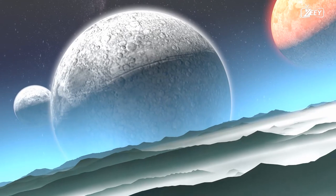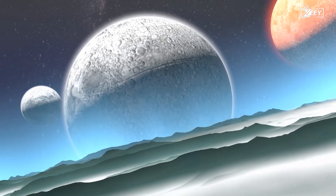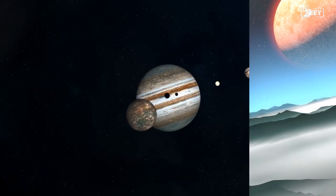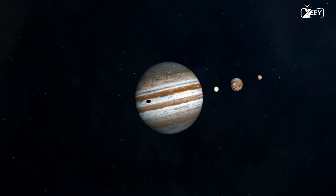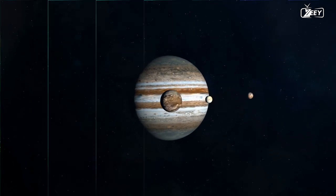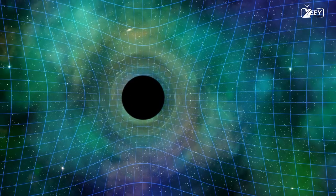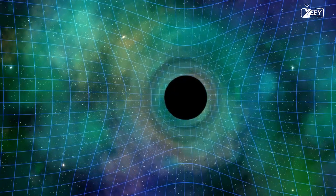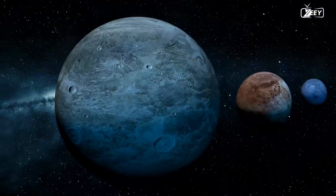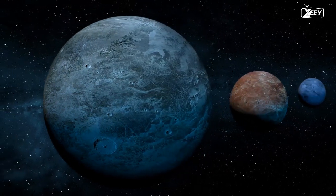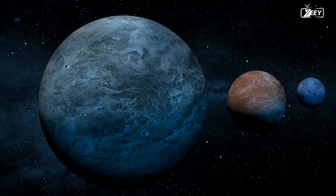However, there is a point beyond which every object tends toward a spherical shape, determined by mass. Above this point, in fact, the cohesive force of the bigger surface structures is defeated by the force of gravity and any major prominence is drawn toward the center of gravity with a force great enough to destroy it. The celestial body's shape therefore tends to become increasingly spherical as mass and, consequently, the surface force of gravity increase.